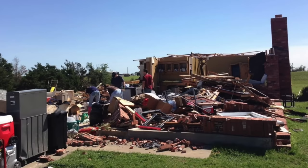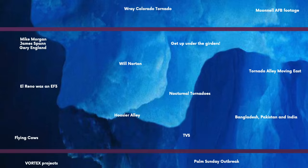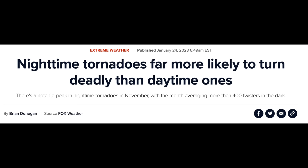Nocturnal tornadoes — tornadoes that occur at night. These are very feared for a good reason: you can't see them coming, and they occur while you're sleeping. For this reason, they're actually twice as deadly compared to their daytime counterparts. The night factor adds another layer of scariness to events that are already quite frightening.